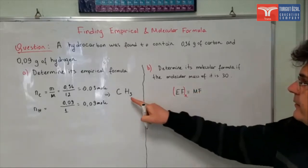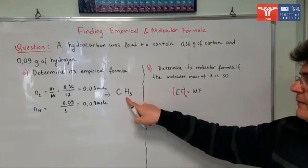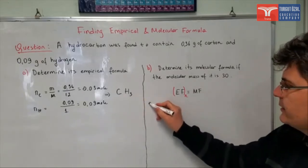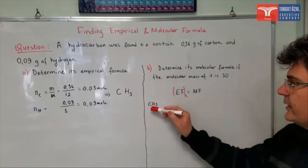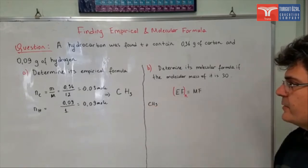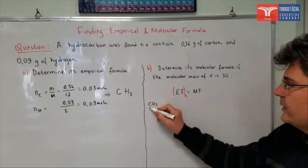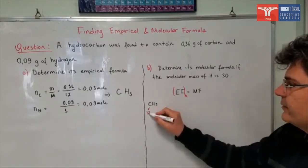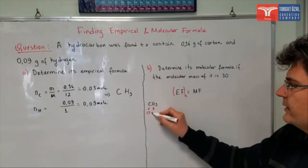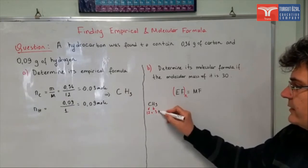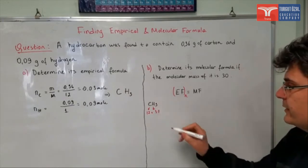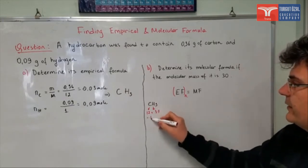So in my question, in the previous part, we found that the empirical formula was CH3. Let me write it here, CH3. If you calculate the mass which corresponds to this empirical formula, you can easily find it as 12 plus 3 times molecular mass of hydrogen. Atomic mass of hydrogen is 1, so it is going to be 15.